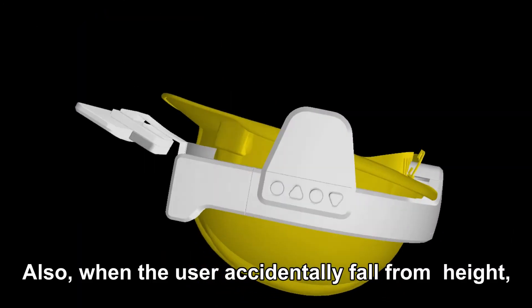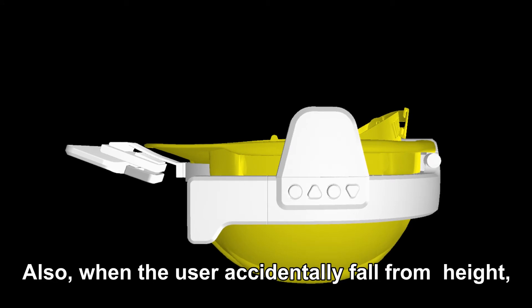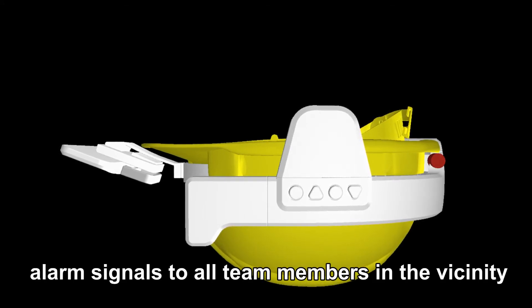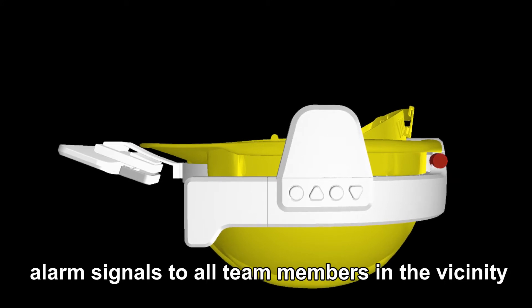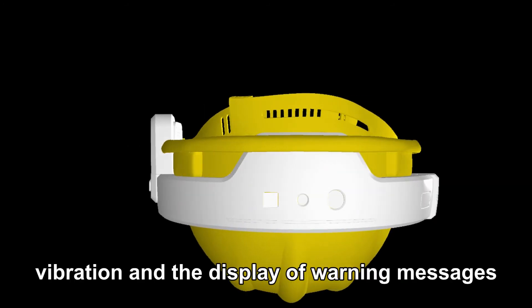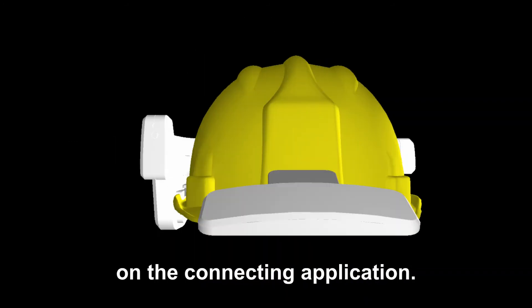Also, when the user accidentally falls from height, the built-in accelerometer sensor will send alarm signals to all team members in the vicinity through speaker, LED light flashing, vibration, and the display of warning messages on the connecting application.